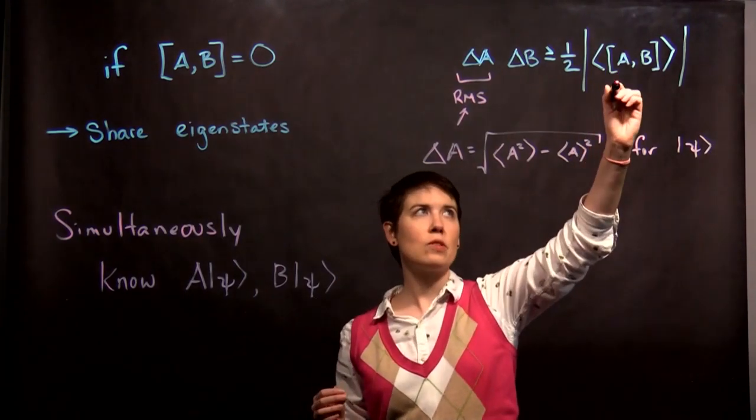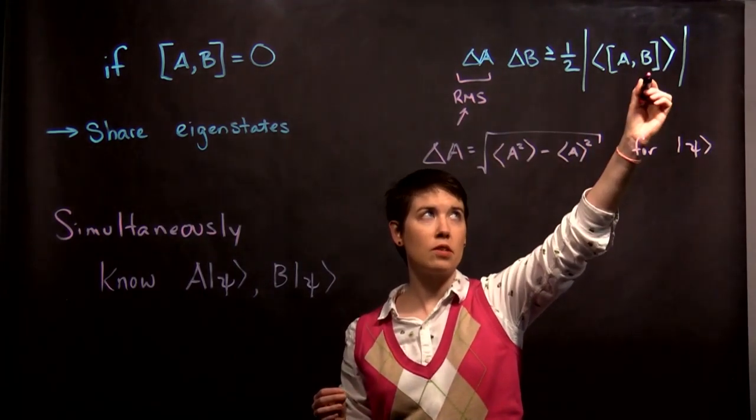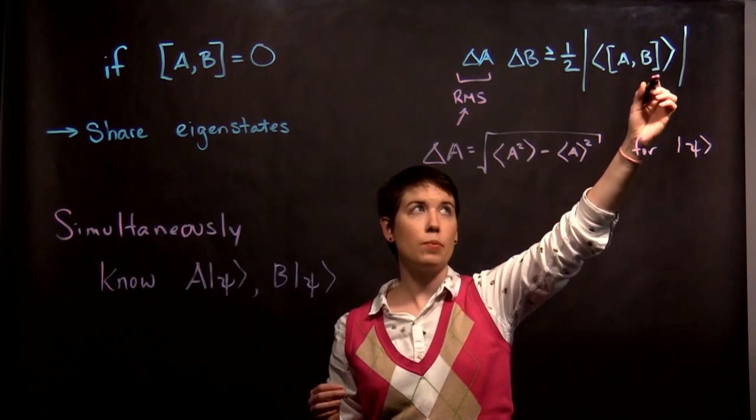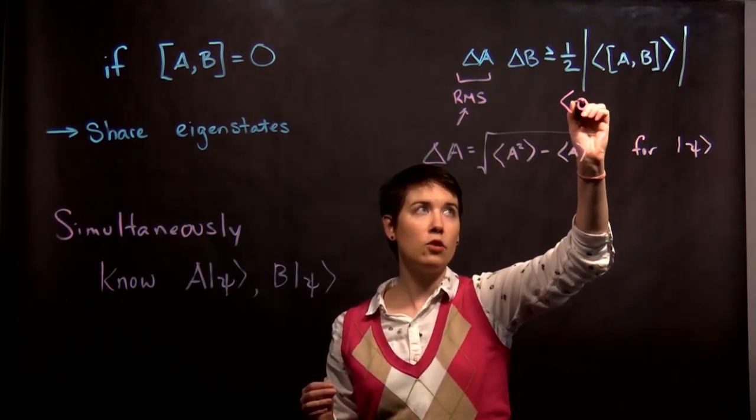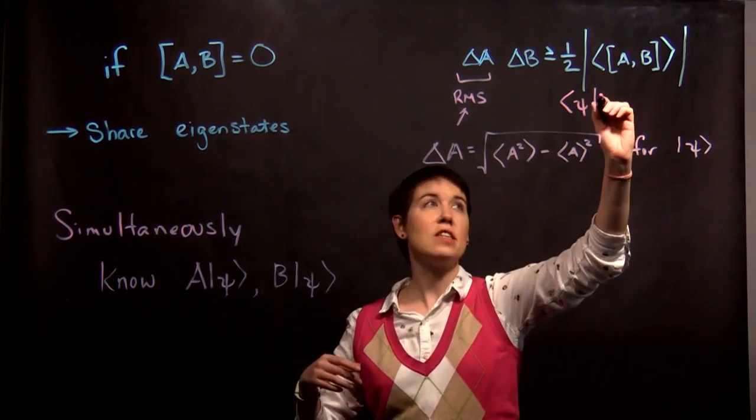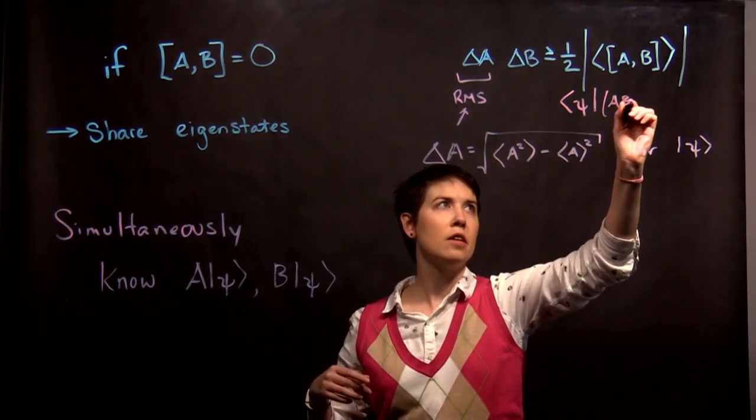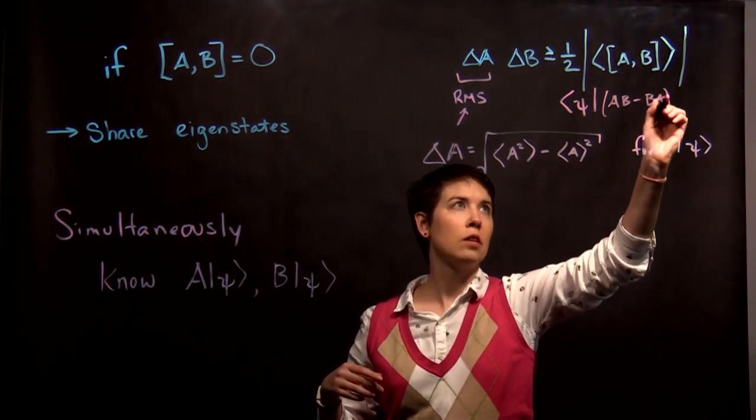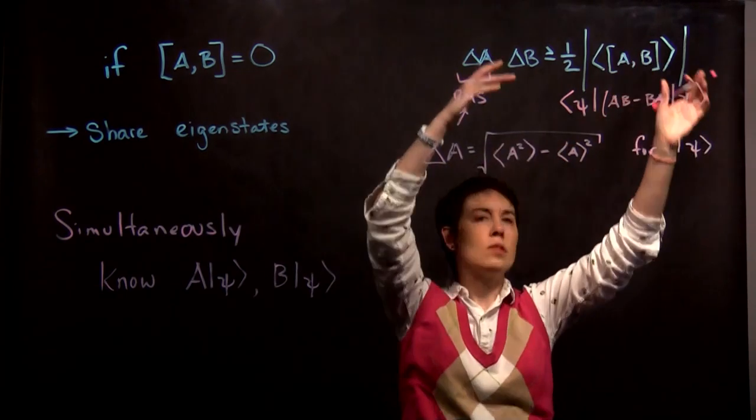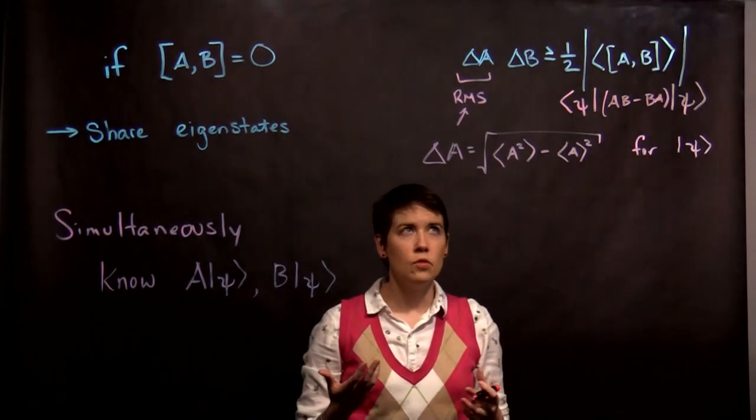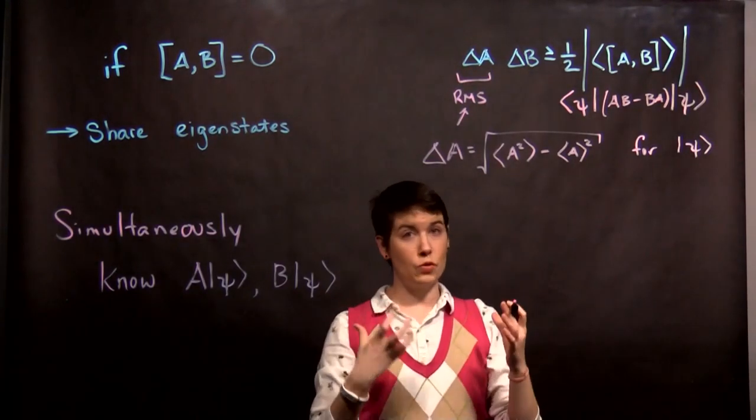And again, notice that we have our commutator on the inside. Then we're taking the expectation value. And so what that means is you have your psi, but then what goes on the inside is AB minus BA. And then again, your other state. Then we have to take that and find the magnitude. So this is our new uncertainty principle.